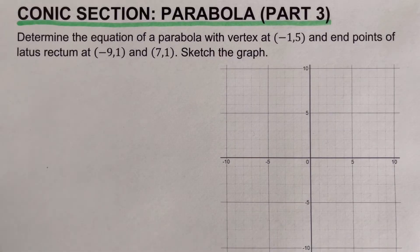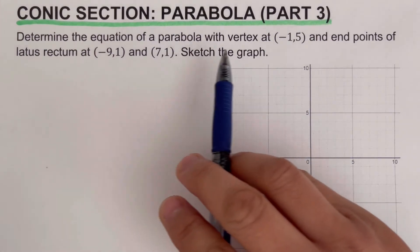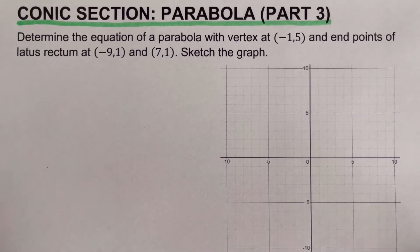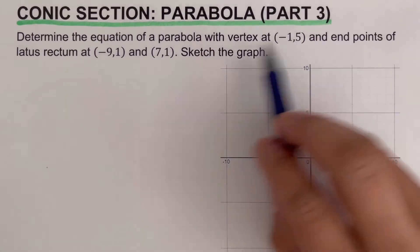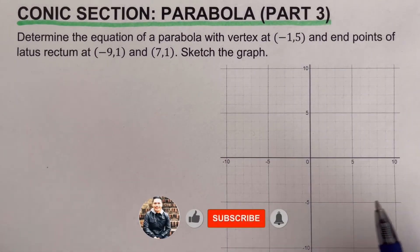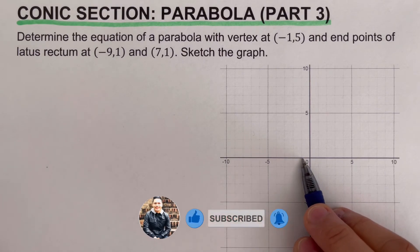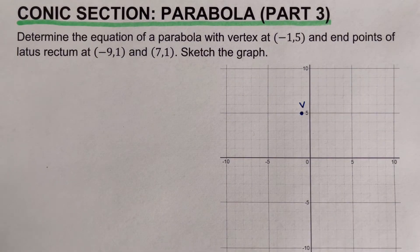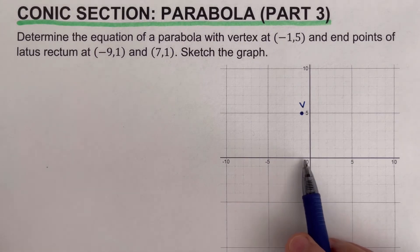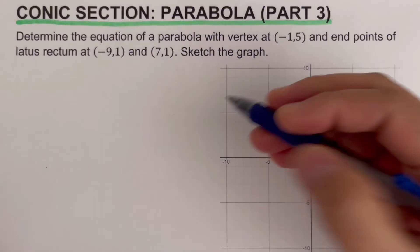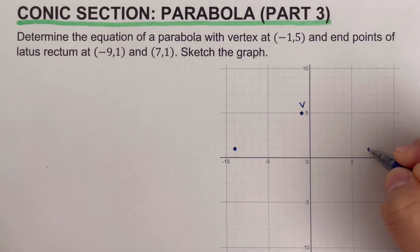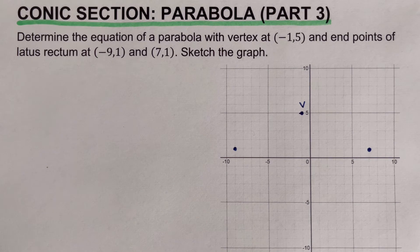Going back to the problem: we need to determine the equation of a parabola with vertex at (−1, 5) and the two ends of the latus rectum at (−9, 1) and (7, 1). The first step is to sketch these three points. We place the vertex at (−1, 5), and the two ends of the latus rectum at (−9, 1) and (7, 1). Notice we do not have the focus yet.